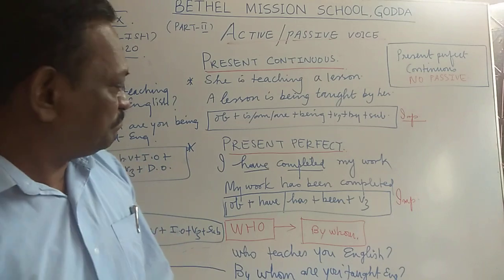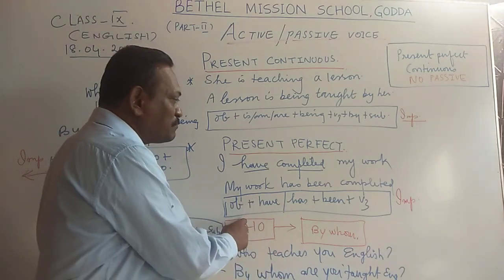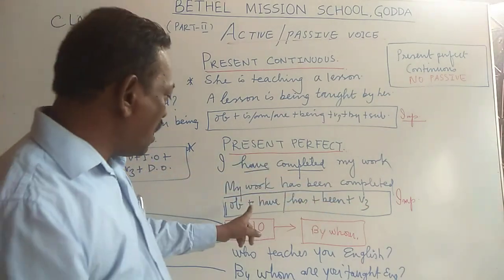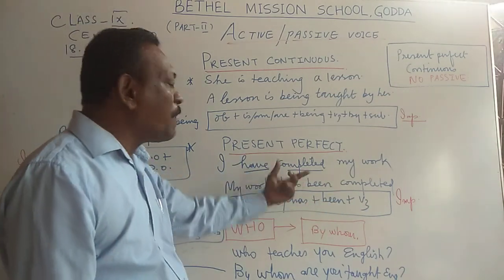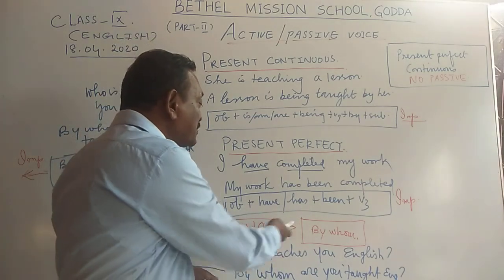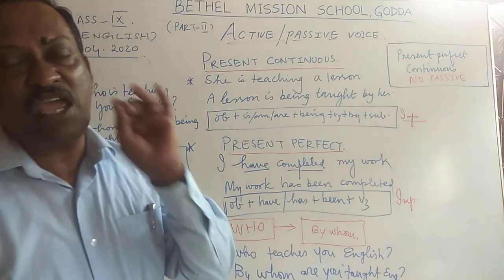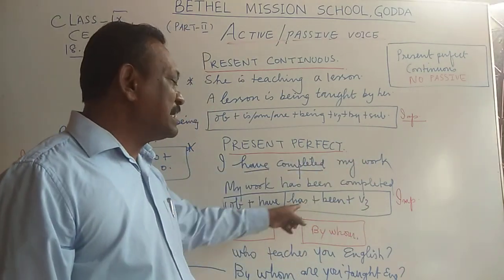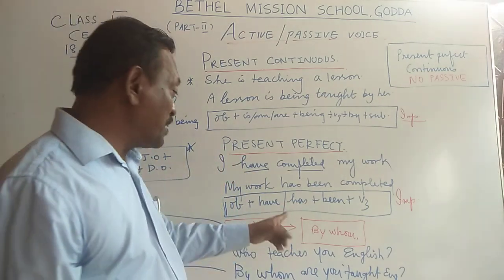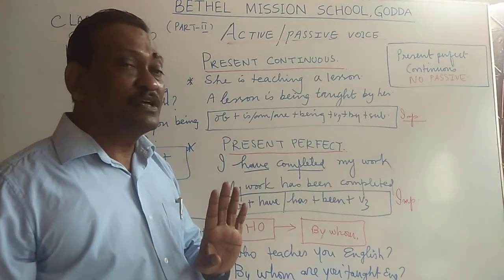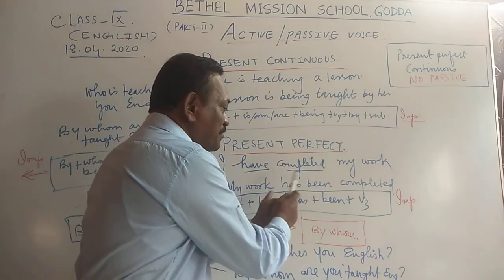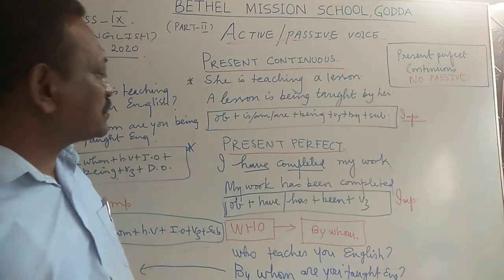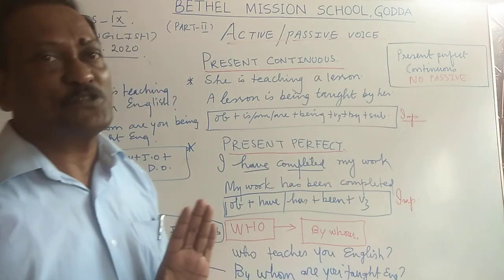'Completed' is the past participle. Now look at the formula for present perfect passive: Object + have or has (depending on whether the object is singular or plural — singular takes 'has', plural takes 'have') + been + V3 (past participle). That is exactly the passive form of present perfect — the formula.